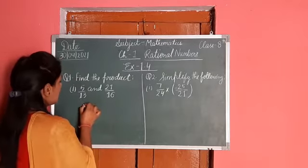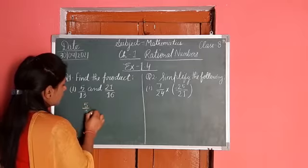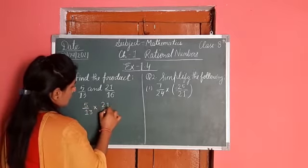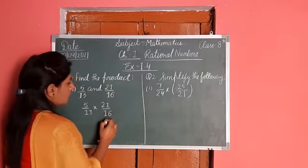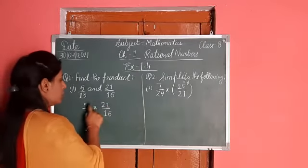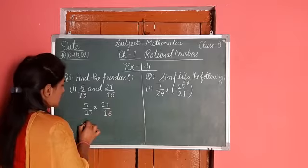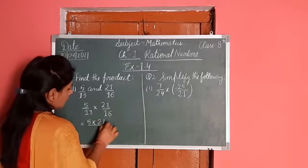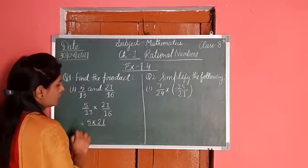5 upon 13 into 21 upon 16. Product of their numerators: 5 into 21 upon product of their denominators: 13 into 16.